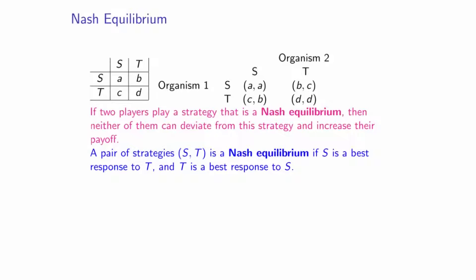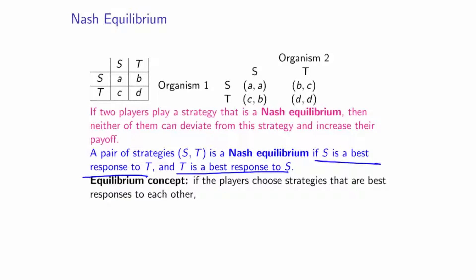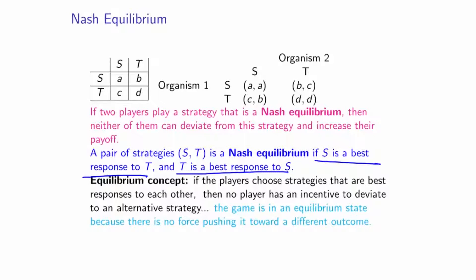Another way of phrasing Nash Equilibrium is by referring not to one strategy but to a pair of strategies, say S and T. We say the pair is a Nash Equilibrium if S is the best response to T and T is the best response to S. So if players choose strategies that are best responses to each other, then no player has an incentive to deviate to an alternative strategy, and the game is in an equilibrium state because there is no force pushing the game towards a different outcome.